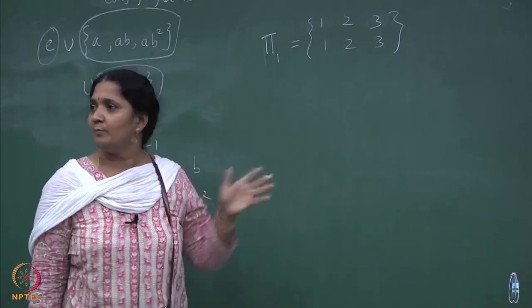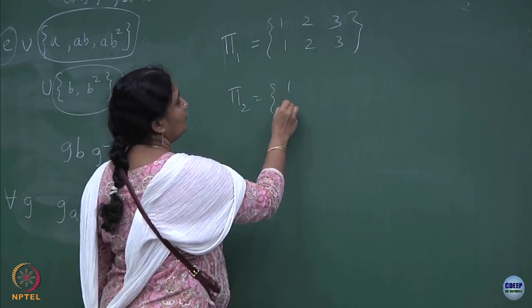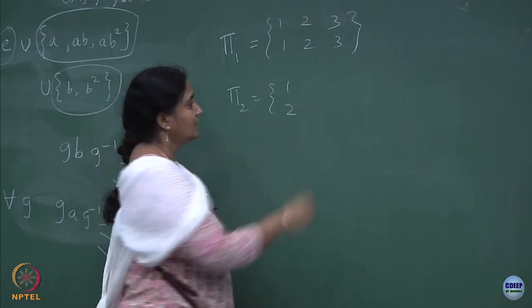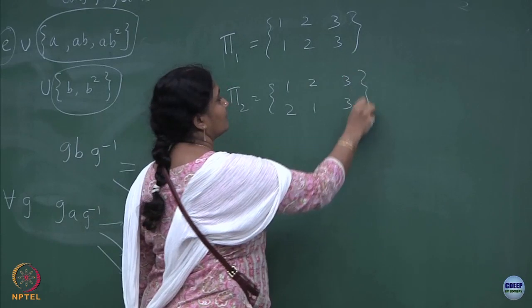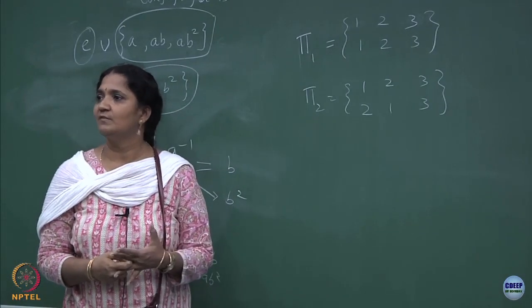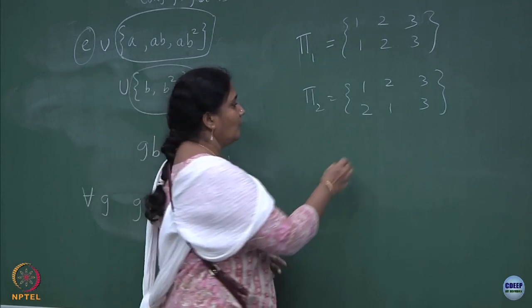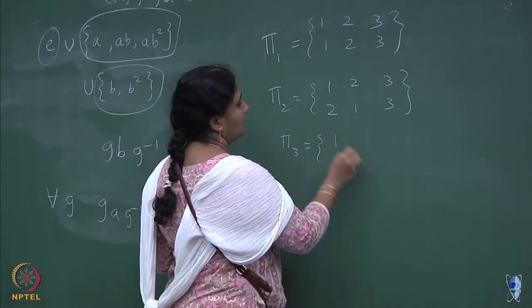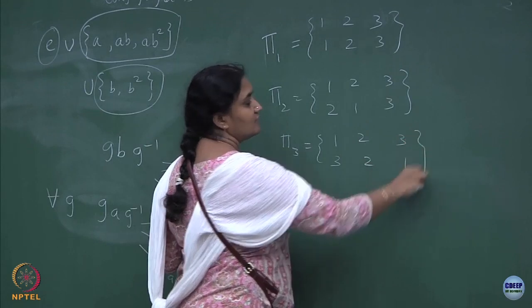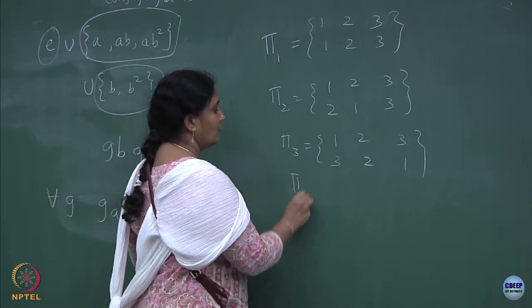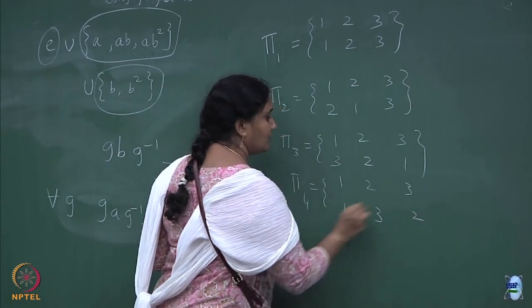No change, no permutation — that is the identity. The second element could be: 1 goes to the second position, 2 goes to the first position, and 3 is not touched. You can have pi 3 where 1 goes to 3 and 2 is not touched. You can have pi 4 where 2 goes to 3, 3 goes to 2, and 1 is not touched.